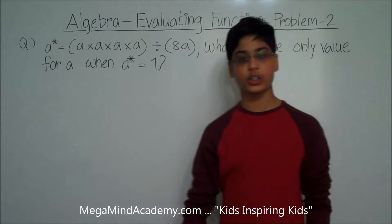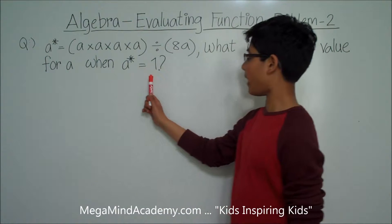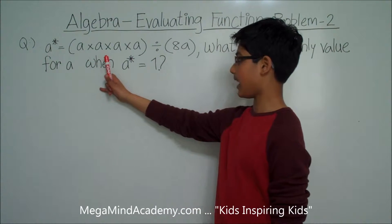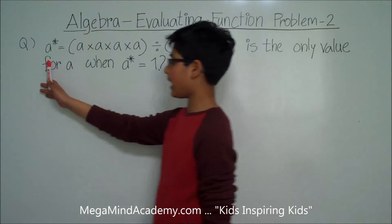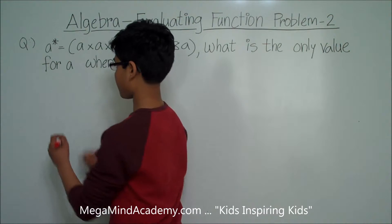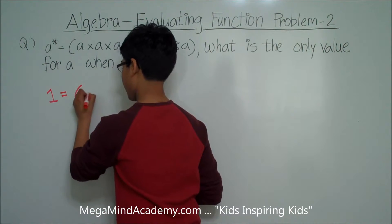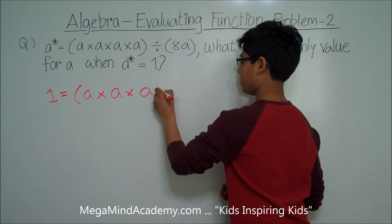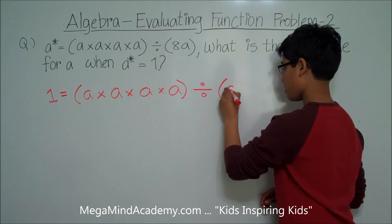We know that evaluating functions means we have to replace, in our case, a asterisk with 1. So in this problem — a asterisk is equal to a times a times a times a divided by 8a — we have to replace the a asterisk with 1. So: 1 is equal to a times a times a times a divided by 8a.